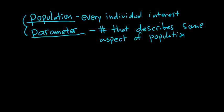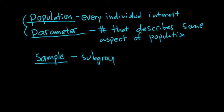In the real world, it's really hard to survey entire populations because populations can be really big. So what we do is we take some of the individuals from a population — that's called a sample. A sample is a subgroup of the population.